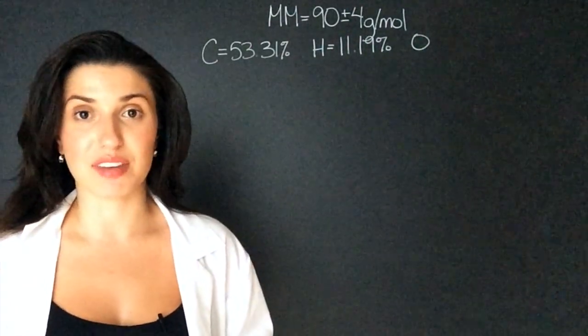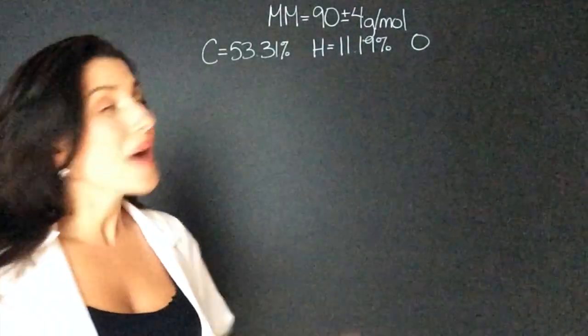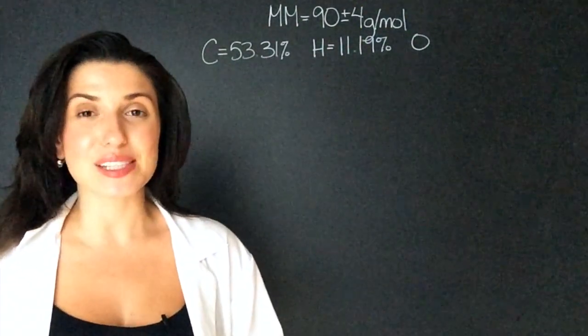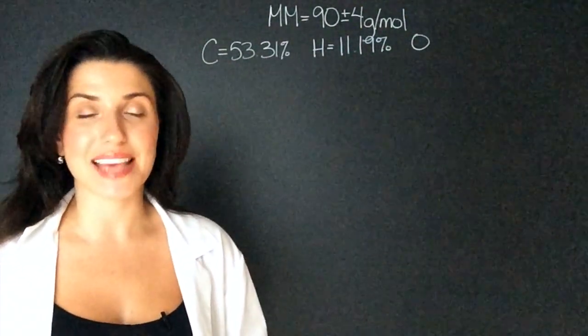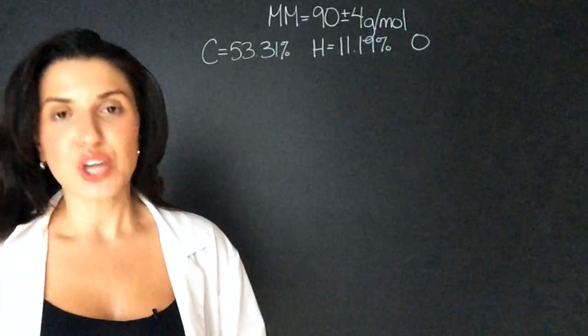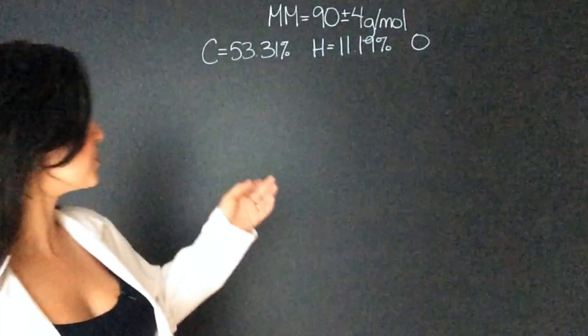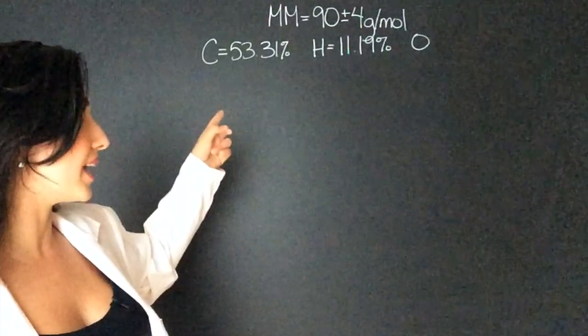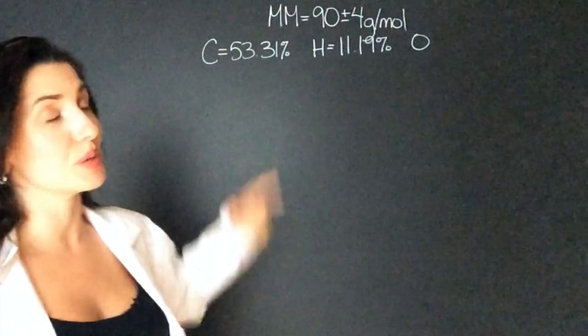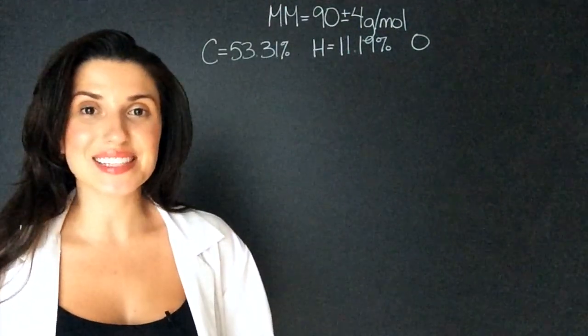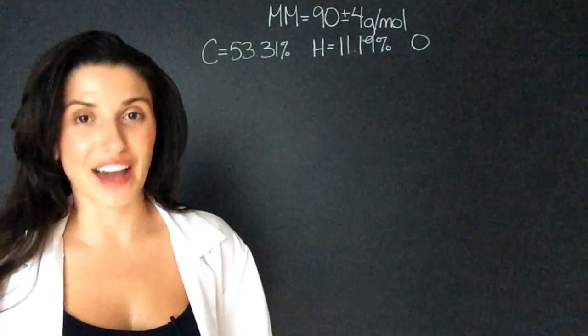Remember to review my mass percent video if you haven't watched that yet. But this is kind of easy because we know that the mass percents have to equal 100. So all we have to do is take 100 and subtract 53.31 and then subtract 11.19. This leaves us with 35.51 percent.